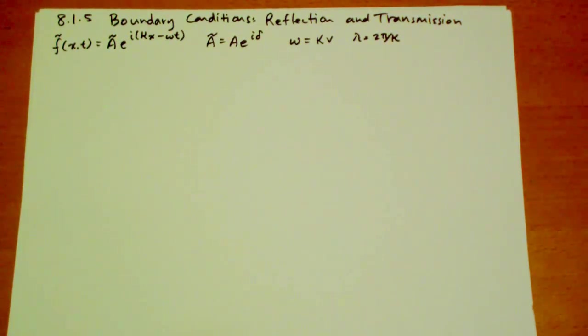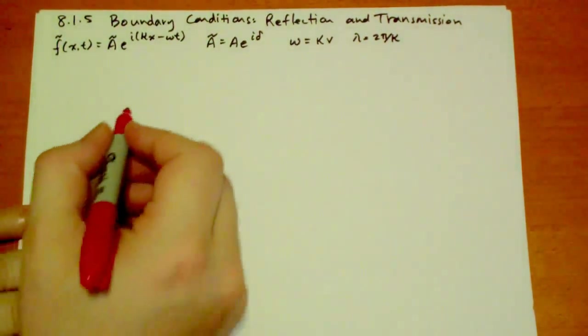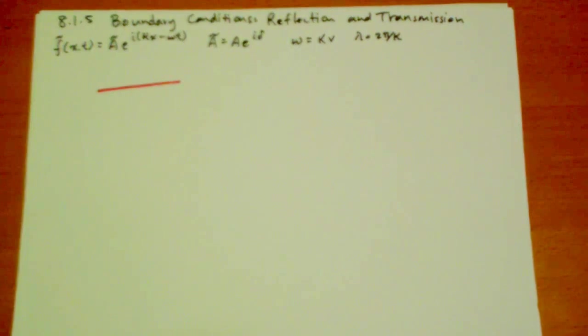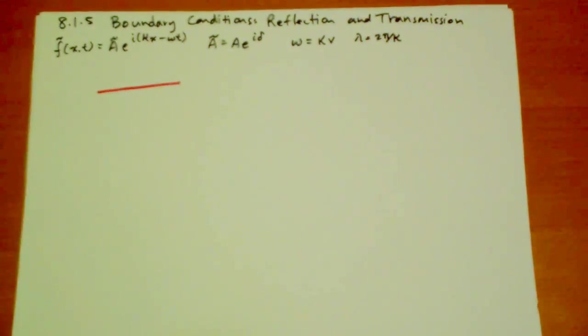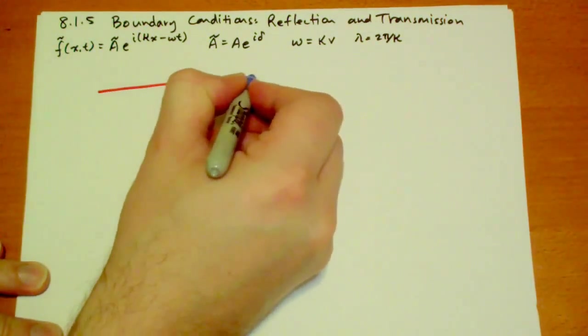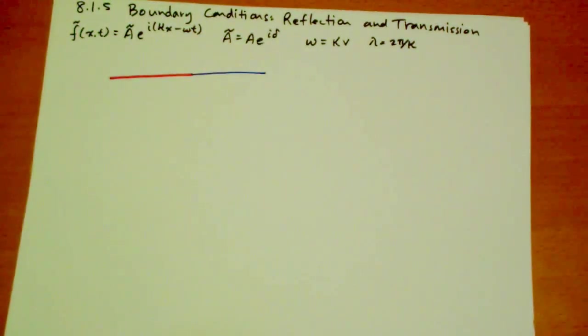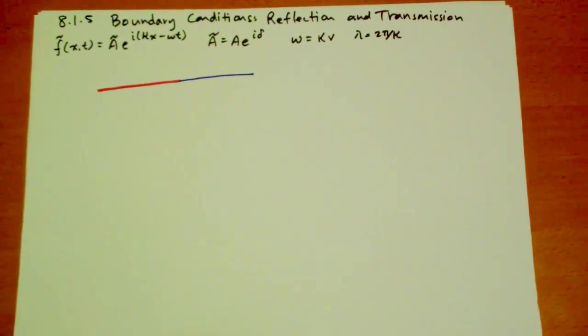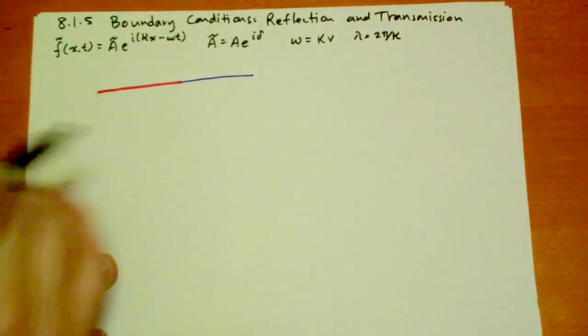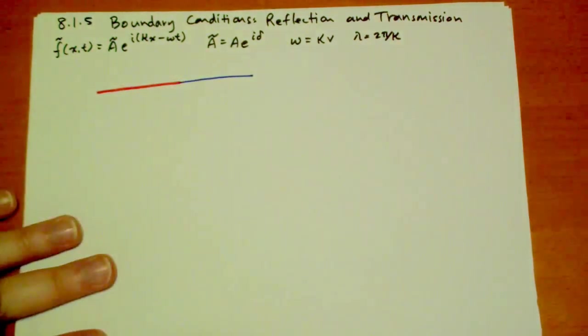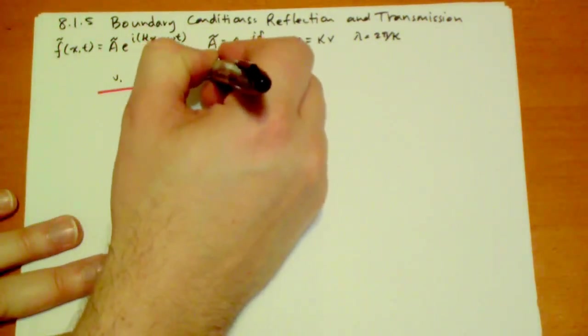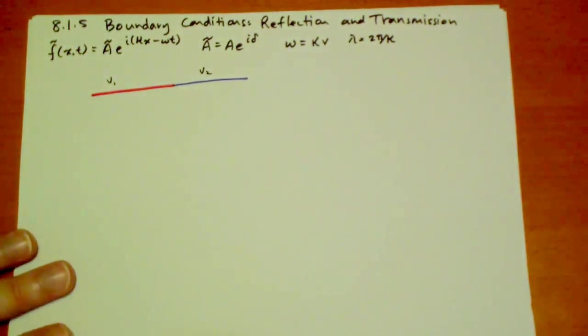Suppose we take a string of one mass per unit length, and we connect it somehow to a string with a different mass per unit length, and put those two strings that are connected together under tension. The velocities on either side of the string have the same tension, but the velocities will be different because they have different masses per unit length.